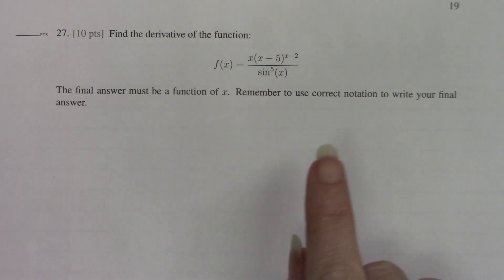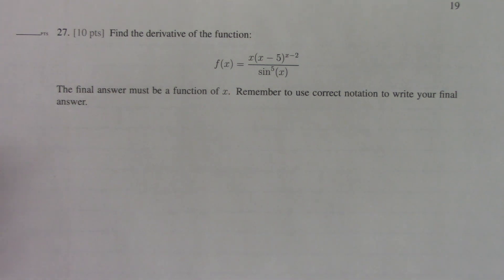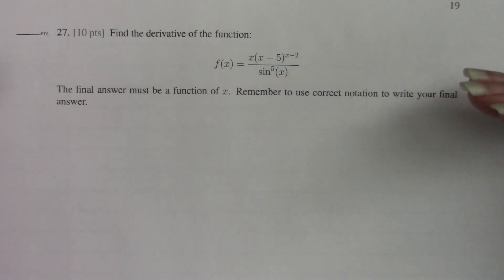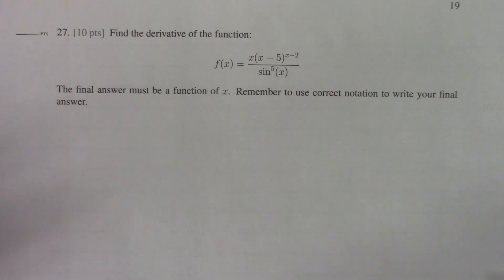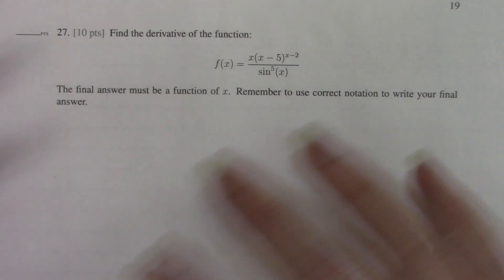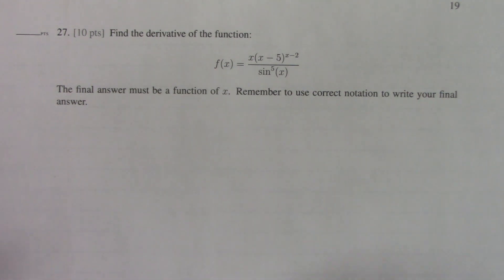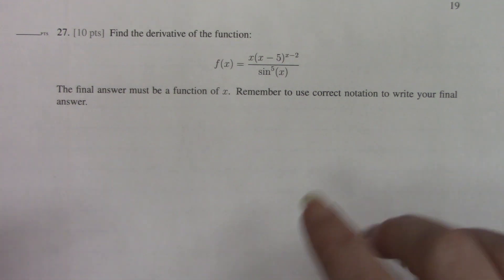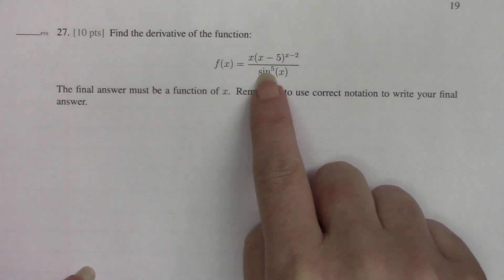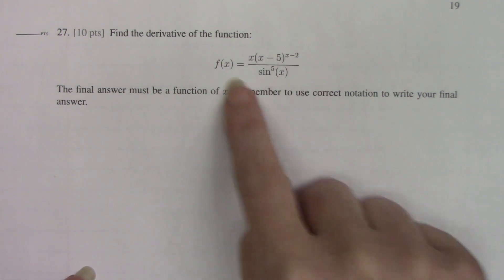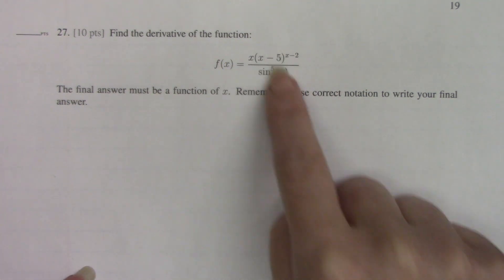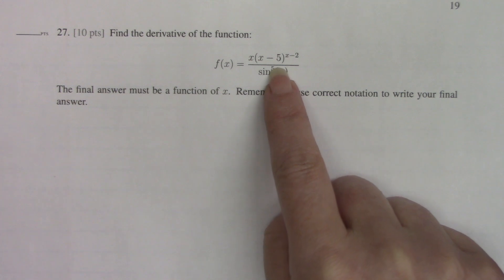The way we decide what derivative rule to use is that we look at the structure of the equation. At first glance, if you're not paying attention — that's why I said don't just dive into the problem — if you just looked at this without paying much attention, you might think you need a quotient rule.